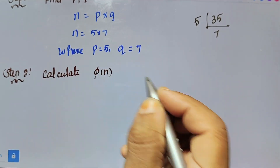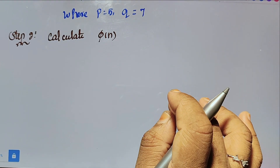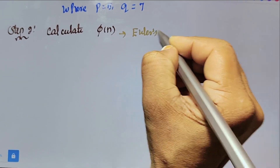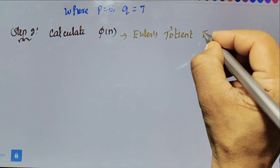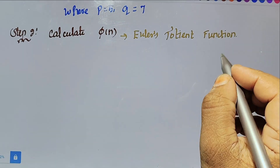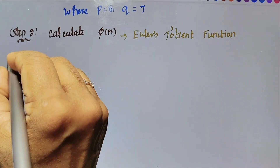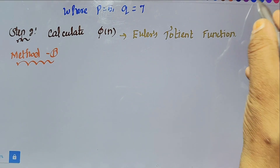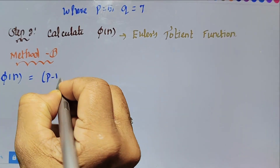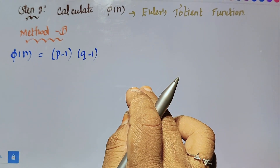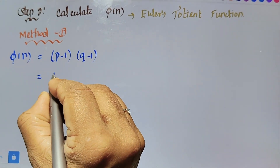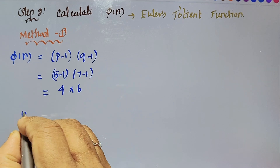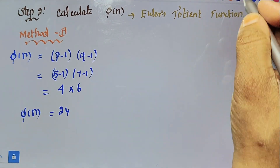Step 2: Calculate phi of n, which is Euler's totient function. There are two methods to find phi of n. Method 1: phi of n equal to (p minus 1) into (q minus 1). Substituting the values, that is (5 minus 1) into (7 minus 1), which gives 4 into 6, so phi of n equal to 24.